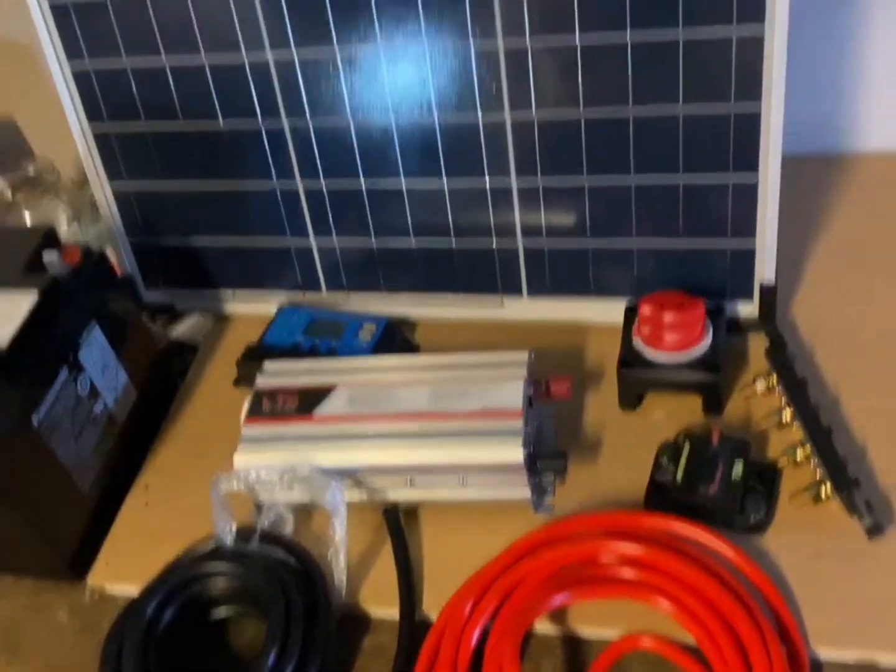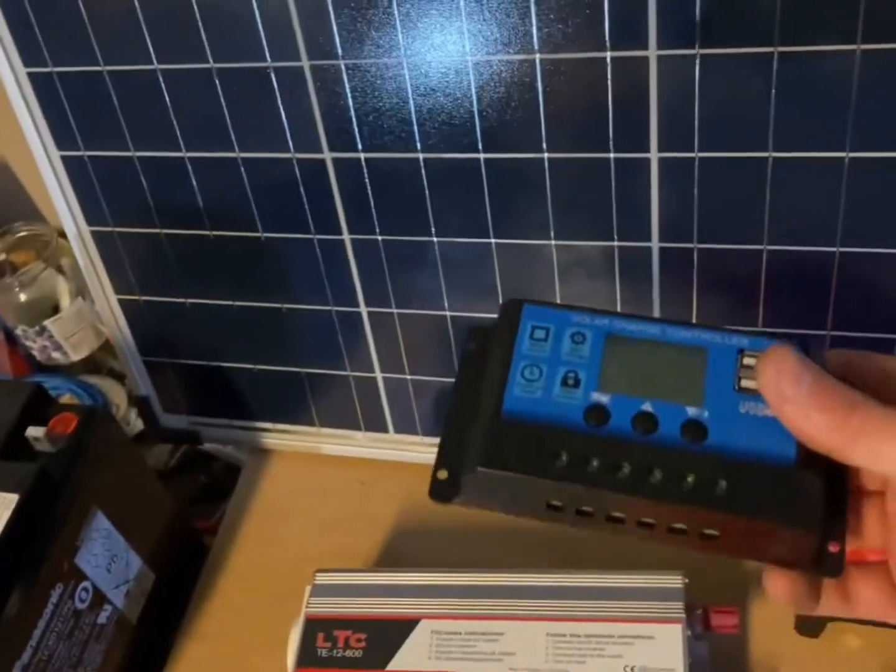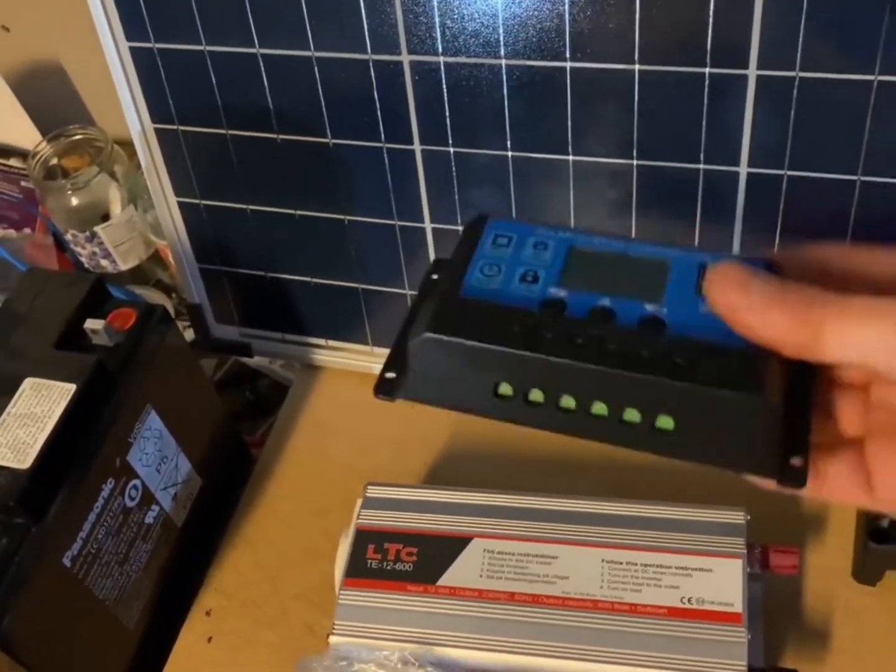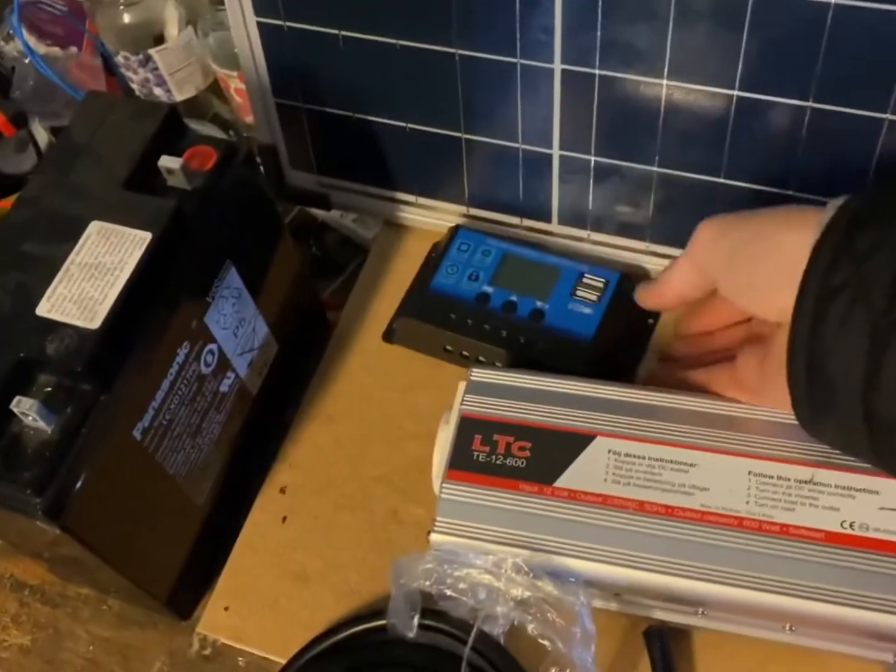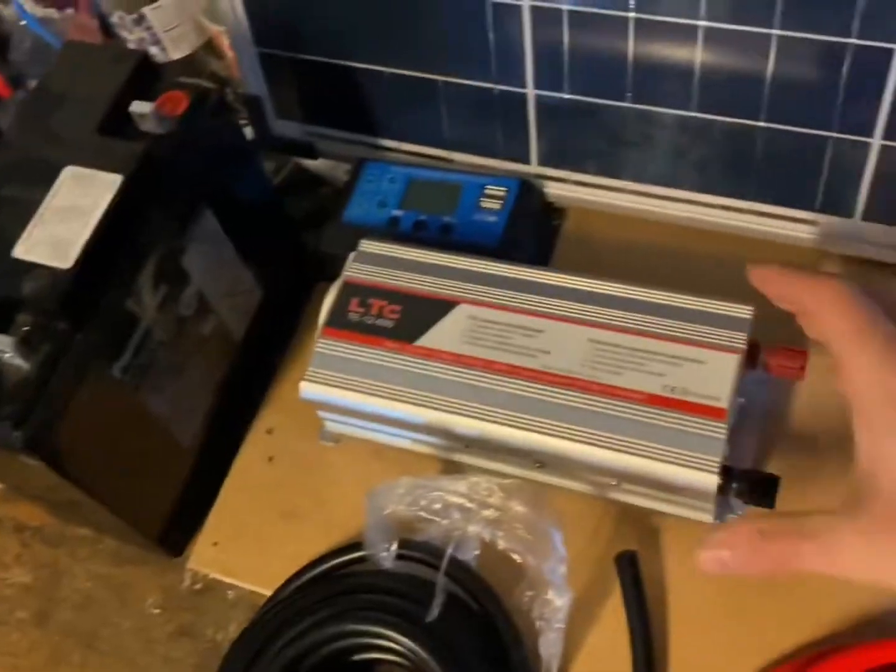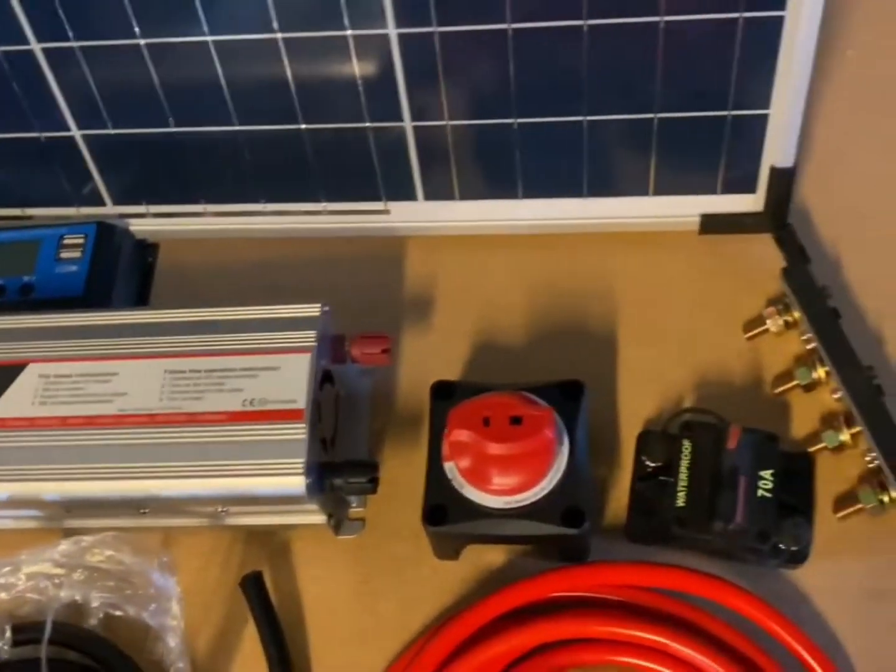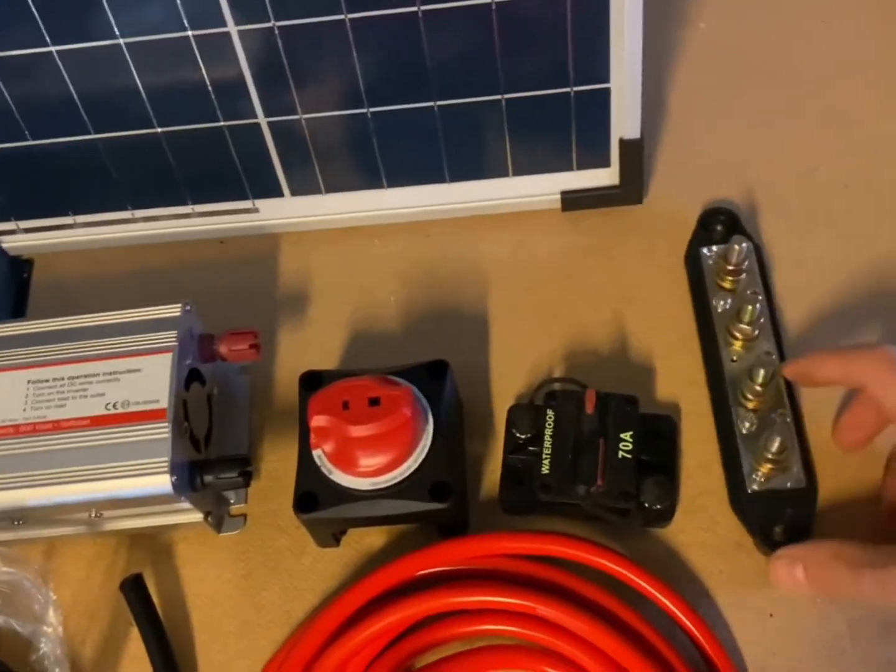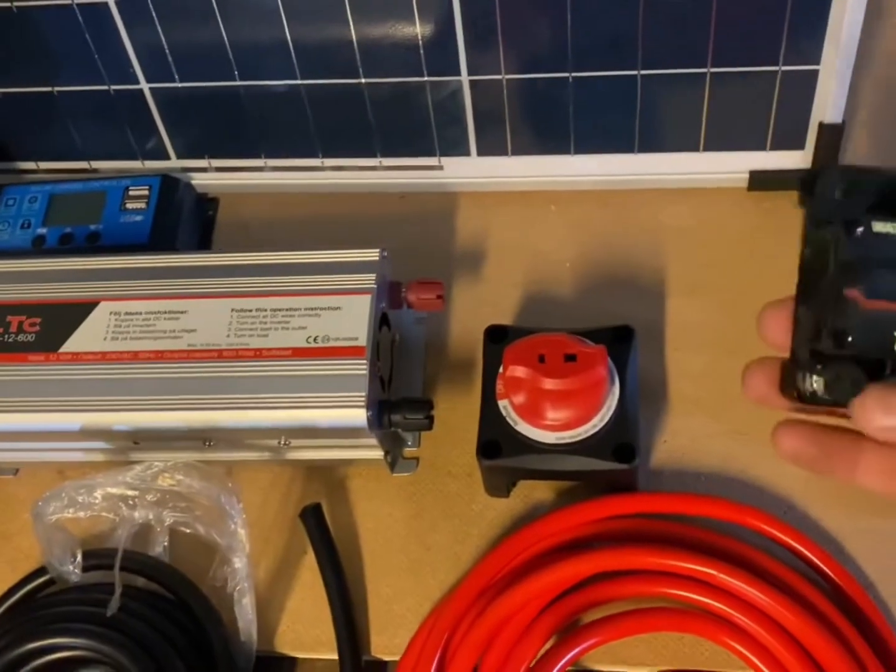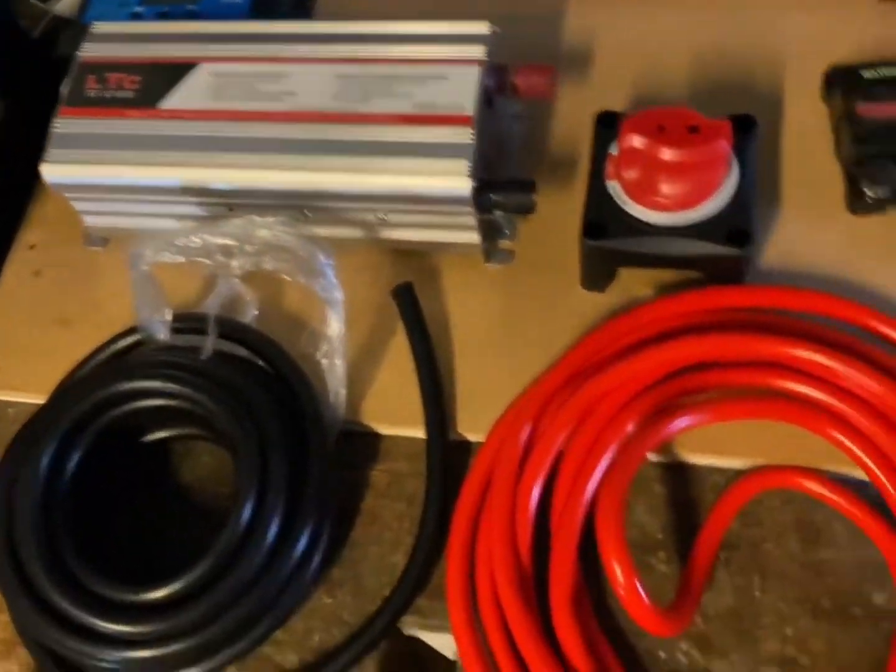This is pretty much every component that you need: charge controller, this is a pulse width modulation, it's cheap, it works. An inverter, 600 watts, 12 volts. Switch for the battery, bus bar for the negative, circuit breaker for the battery, and cables.